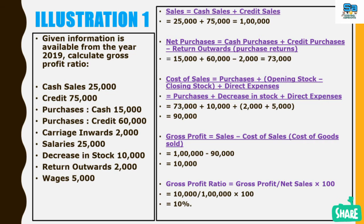First we will find out the net sales value. We have the given information: cash sales 25,000 plus credit sales 75,000. By adding both we will get net sales value of 1 lakh. Now we have to get the gross profit amount.